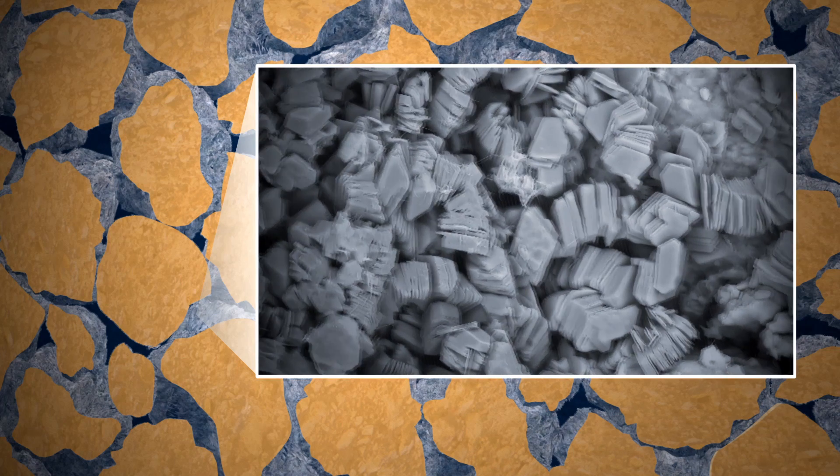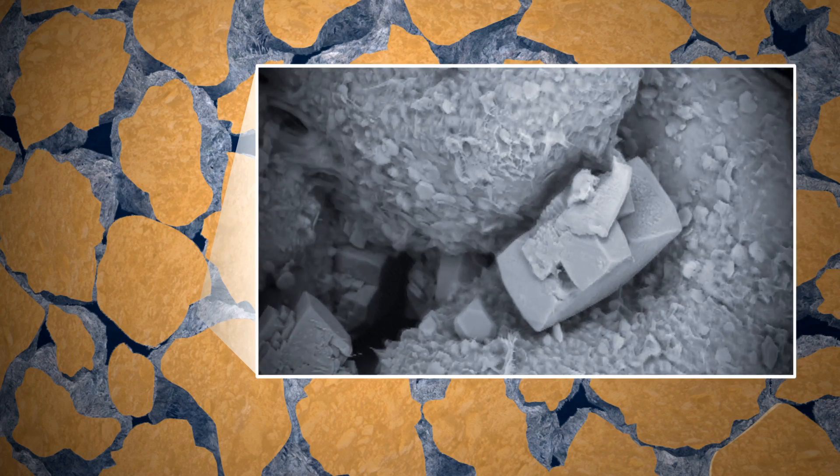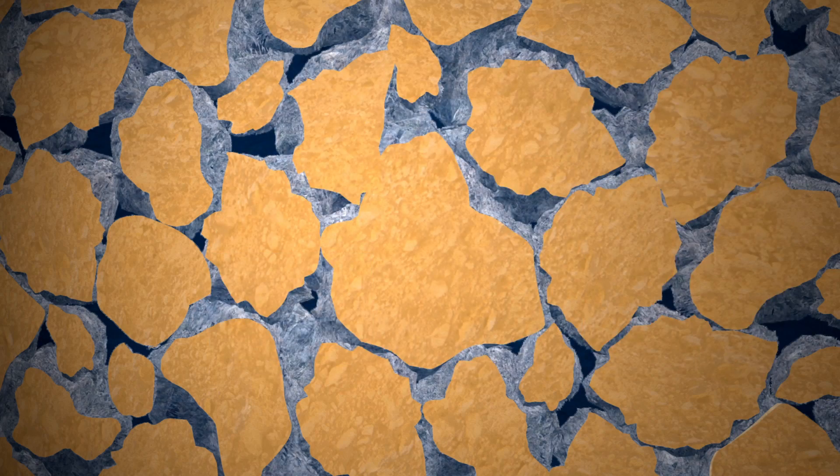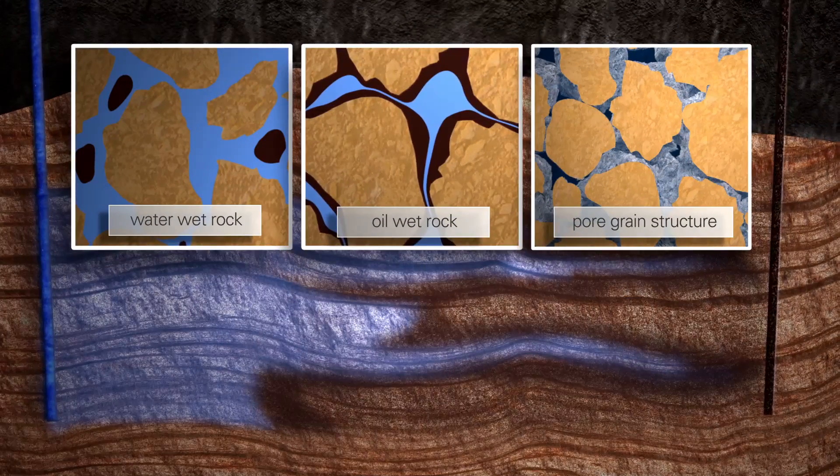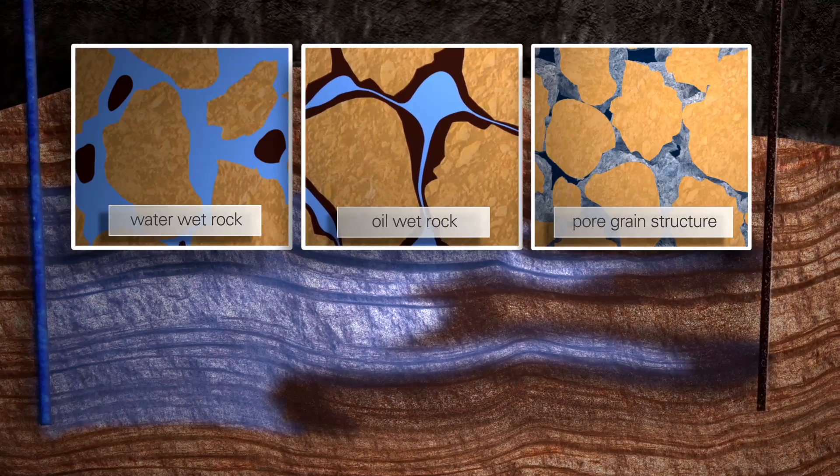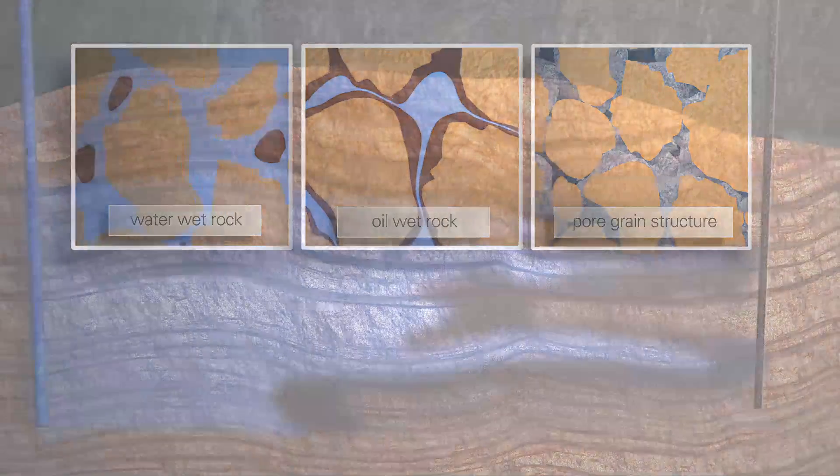For example, clay minerals found coating rock grains or in clusters within the pore spaces can control wettability. Pore-scale displacement is controlled by the distribution of wettability and pore grain structure, which can vary dramatically within the reservoir.